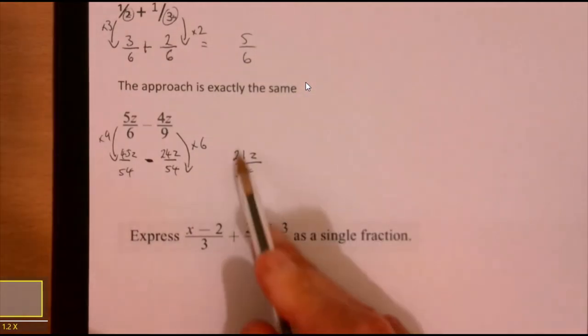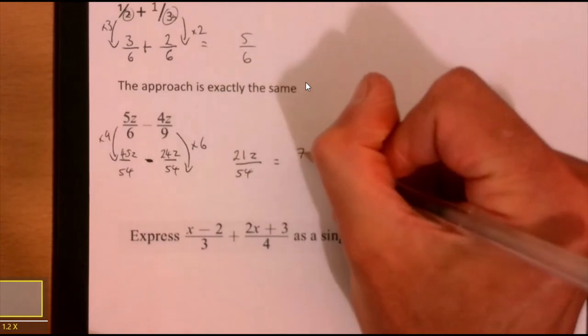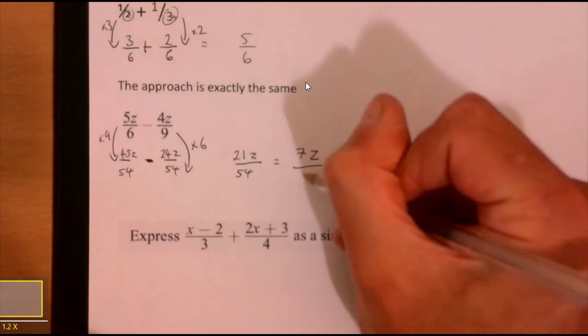So 45 take away 24 is 21, 21z over 54. Now have a look, see if anything will cancel down. Well I can see that 3 goes into both of these.